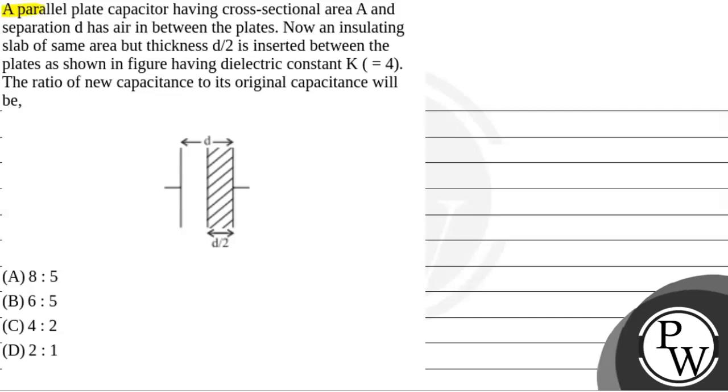The question says that a parallel plate capacitor having cross-sectional area A and separation D has air between the plates. Now, an insulating slab of same area but thickness d by 2 is inserted between the plates, as shown in the figure, having dielectric constant k equal to 4. The ratio of new capacitance to its original capacitance will be.